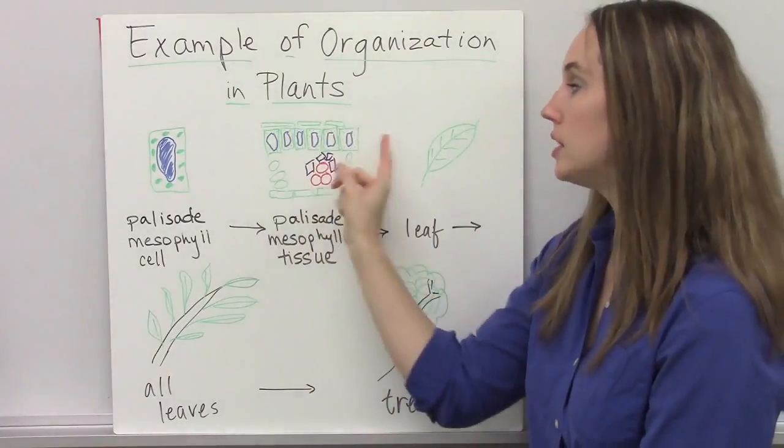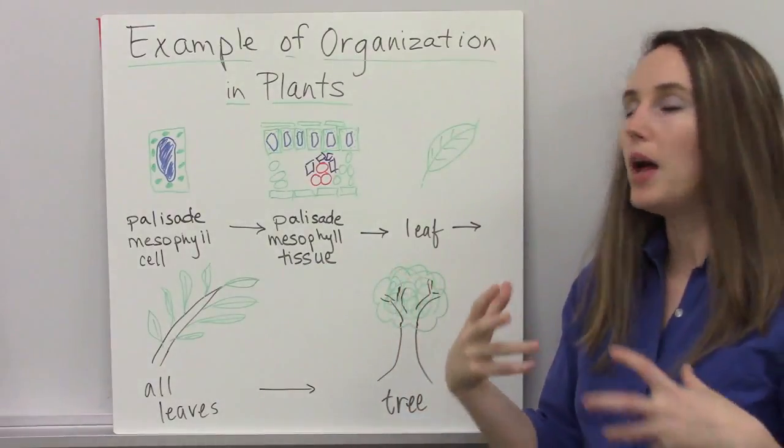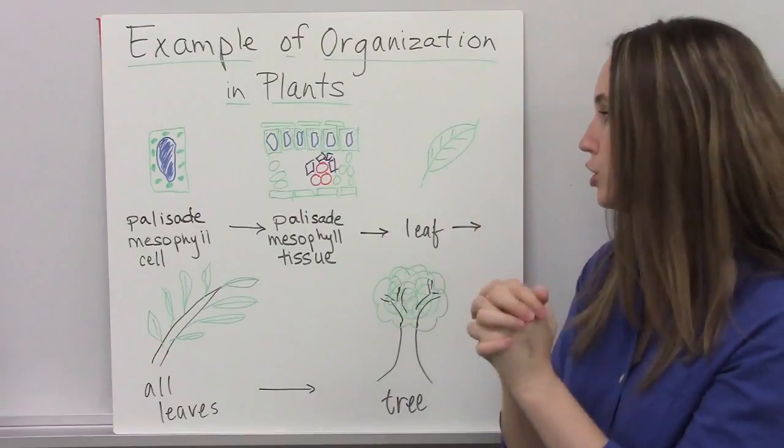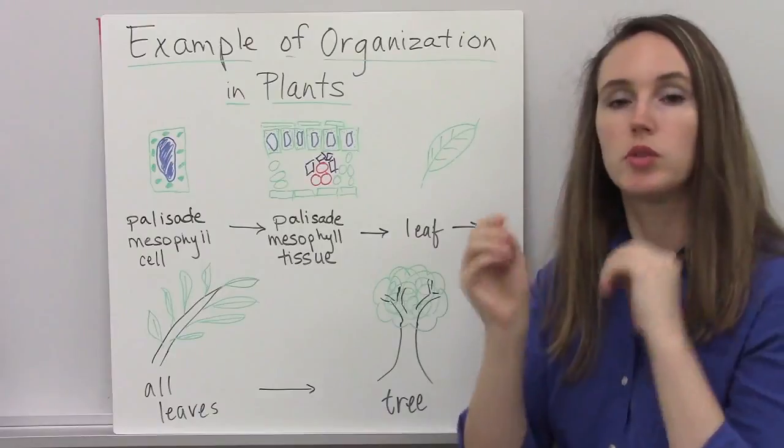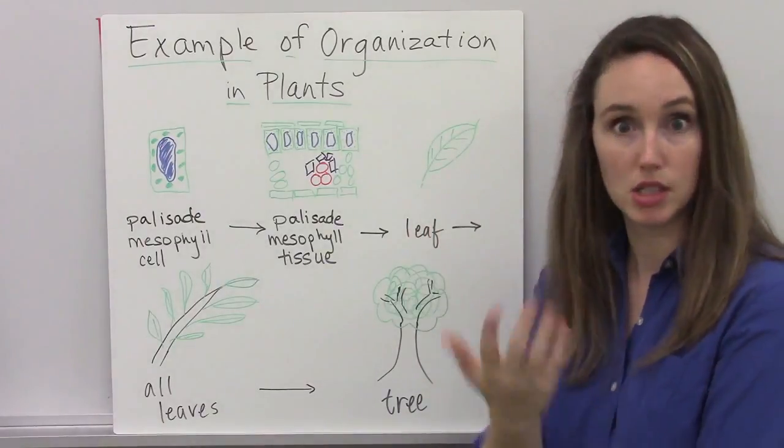And again, the job of this, these will be to do photosynthesis. And when you put this tissue, this palisade mesophyll tissue together in a certain shape, in a certain way, interacting with some other component parts of leaves, you get an entire leaf itself.